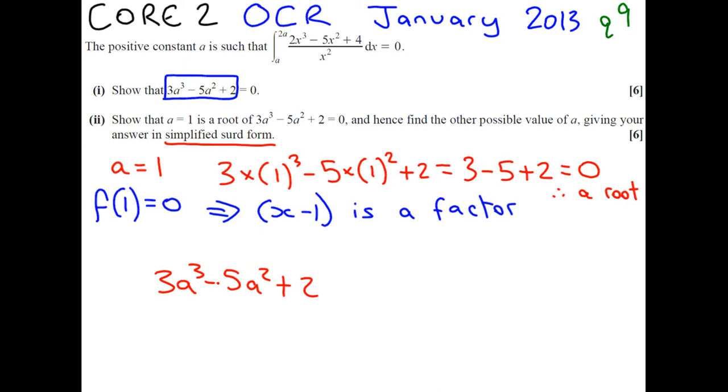So, 3A cubed minus 5A squared plus 2 is our expression. Now, be careful because we need placeholders. So, instead of putting 2 yet, you need to have 0A and then your 2. Now, the exam question has tried to trick you by using A's instead of x. So, we want to divide this by our factor, A minus 1, to find our quotient.